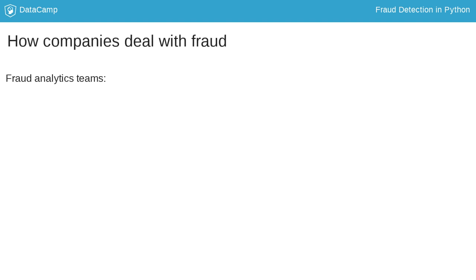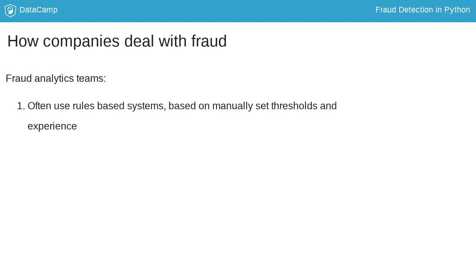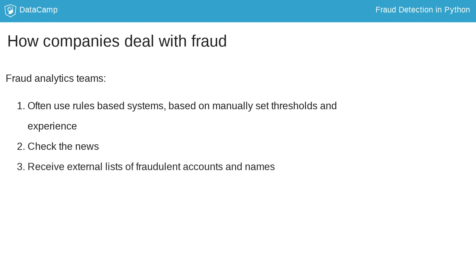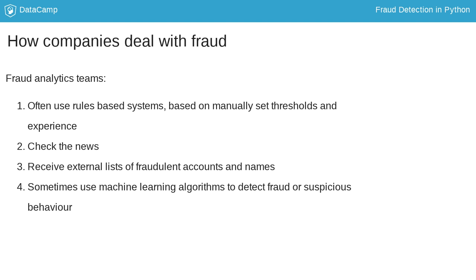As a data scientist working on fraud analytics, you'll often be asked to improve existing fraud detection systems. You may find that the company already uses a rules-based system to filter out strange cases, or that the fraud analytics team checks the news for suspicious names or keeps track of external hit lists from the police to reference check against the client base. All these existing methods can be useful inputs for your machine learning model, but do be mindful when using labels from rules-based systems — you should always ask yourself whether the labels are reliable, as they might not catch all fraudulent cases.